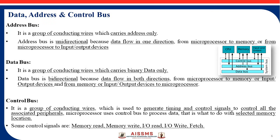The control bus is a group of conducting wires that control signals and attached peripheral devices. For example, users can perform read and write operations in memory — these are the control signals. The control bus controls memory read, memory write, as well as I/O read and I/O write operations. When a user wants to fetch data from memory, these control signals are handled by the control bus.